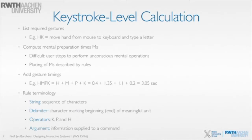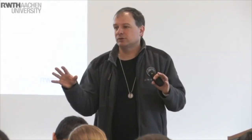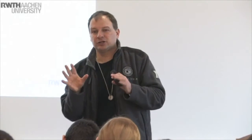A few terminology notes: a string is any sequence of characters you type on a keyboard. A delimiter marks the beginning or end of a meaningful unit, like a space or return. The operators for the simple keystroke level model are keying, pointing, homing, and the mental operator for verification. An argument is something supplied to a command — for example, on a Unix shell typing 'ls' followed by a space and the directory name, that directory is the argument to the command.